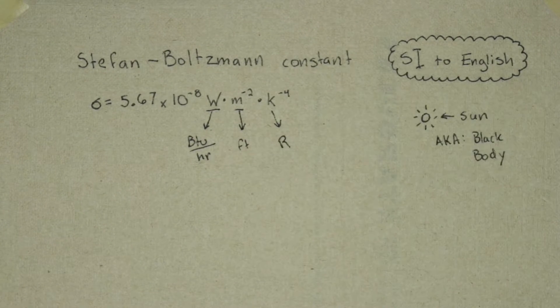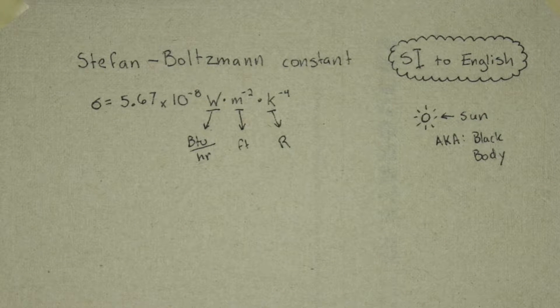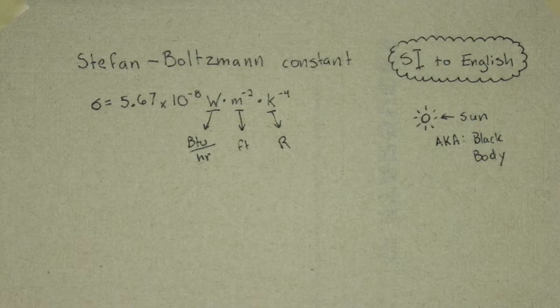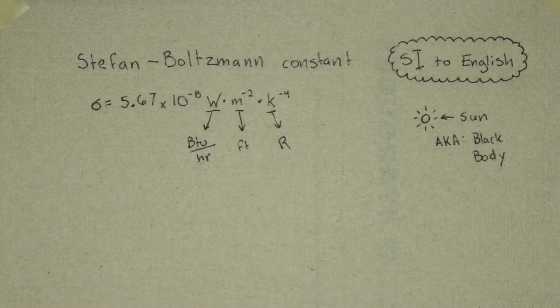So what we need to do is identify the units used in this constant and convert them from international units to English units. We have watts, which would be converted to BTUs per hour, meters, which would be converted to feet, and degrees Kelvin, which would be converted to degrees Rankine.